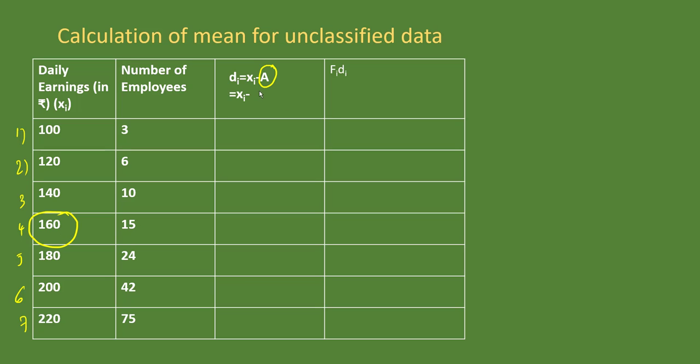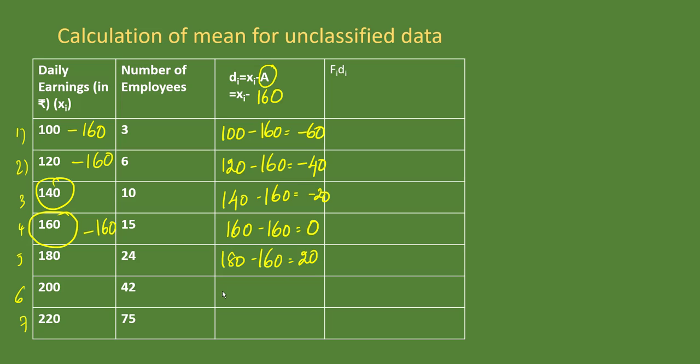From every data we are going to take this data minus 160. We have 100 minus 160 which gives us -60, then 120 minus 160 gives -40, then 140 minus 160 gives -20, 160 minus 160 gives 0, 180 minus 160 gives 20, 200 minus 160 gives 40, and 220 minus 160 gives 60.